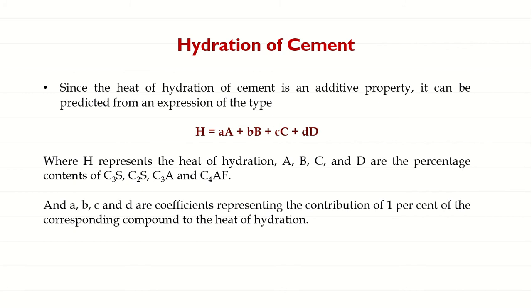Heat of hydration is considered to be an additive property of cement — by default this property comes with the cement during manufacture. You can calculate the heat of hydration from the expression: H = a·A + b·B + c·C + d·D, where H represents heat of hydration. Capital A, B, C, D represent the values of the Bogue compounds C3S, C2S, C3A, and C4AF, and the small letters a, b, c, d represent the contribution of 1% of that corresponding compound to heat of hydration.